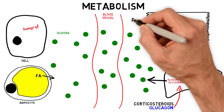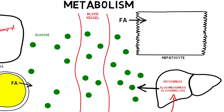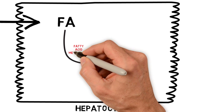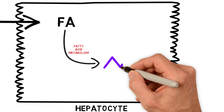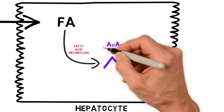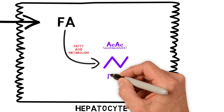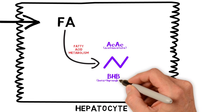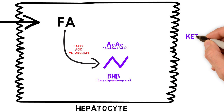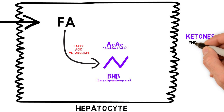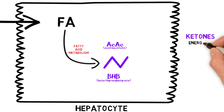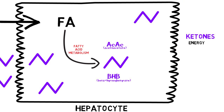The mobilized free fatty acids make their way to the liver and are metabolized into ketones — acetoacetate and beta-hydroxybutyrate. In the absence of glucose, these ketones serve as energy sources for the brain and vital organs. In DKA, these ketones are overproduced and accumulate, causing ketosis.